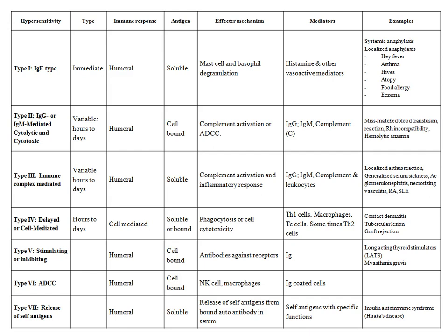In Type 2, the immune response is humoral and the antigen is cell-bound. Once the antibody binds, there is activation of the complement or antibody-dependent cell-mediated cytotoxicity, leading to injury. The mediators involved are IgG, IgM, and complement. Examples include mismatched blood transfusion reactions, Rh incompatibility, and hemolytic anemia.